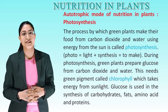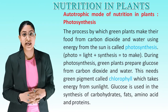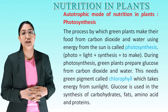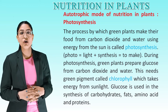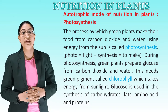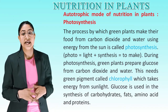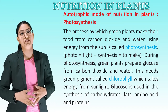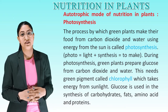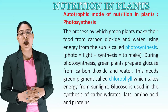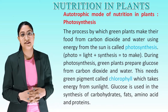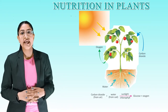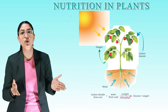Autotrophic mode of nutrition in plants — Photosynthesis. The process by which green plants make their food from carbon dioxide and water using energy from the sun is called photosynthesis. 'Photo' means light and 'synthesis' means to make. During photosynthesis, green plants prepare glucose from carbon dioxide and water. This needs the green pigment called chlorophyll, which takes energy from sunlight. Glucose is then used in the synthesis of carbohydrates, fats, amino acids, and proteins. The equation: carbon dioxide from air and water from soil, in the presence of sunlight and chlorophyll, gives glucose and oxygen.